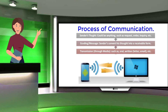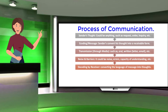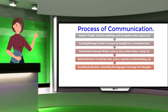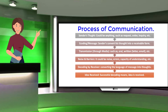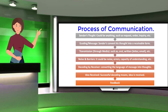Then, there is noise and barriers — it could be noise, errors, and capacity of understanding, etc. Then, the idea is received — a successful decoding means idea is received. Then, feedback is obtained. We will discuss the details of these elements in a few minutes.